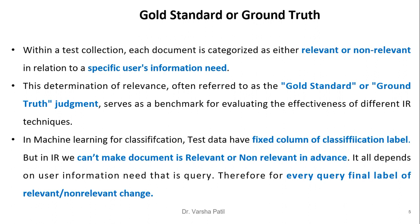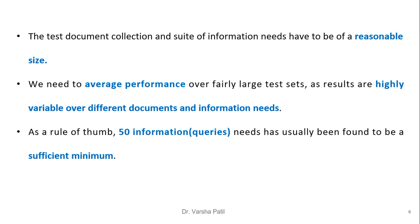In IR, the relevancy or irrelevancy of documents depends on the query. For example, if there are 10 queries, the relevance labels are different for each query — the final column label changes. We therefore require a training set where the final column label changes between relevant and irrelevant according to the perspective of each query.